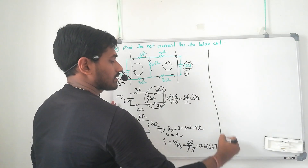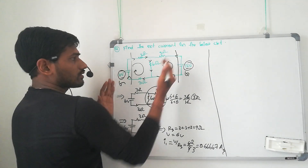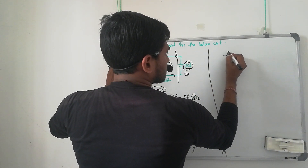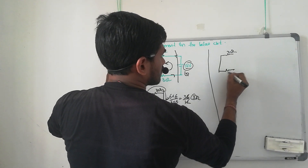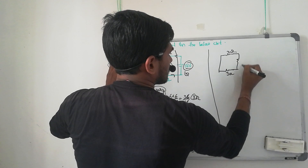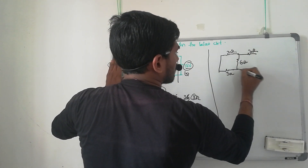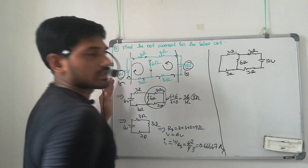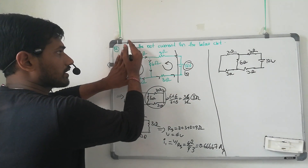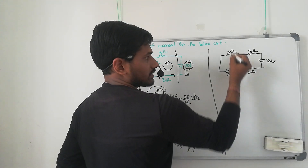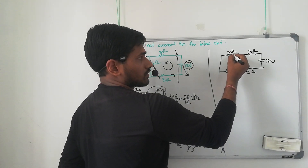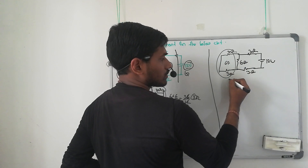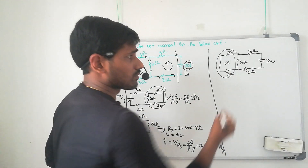Next, we short circuit the left side source and keep the remaining as is. Here 3 ohm, 3 ohm, 6 ohm, 3 ohm, and 3 ohm, with the 12 volt source. Same process: 3 plus 3 equals 6, these two in series. This resultant is 6 ohm, and 6 ohm in parallel gives the same value — 3 ohm. Similarly here also 3 ohm resultant, and here also 3 ohm.